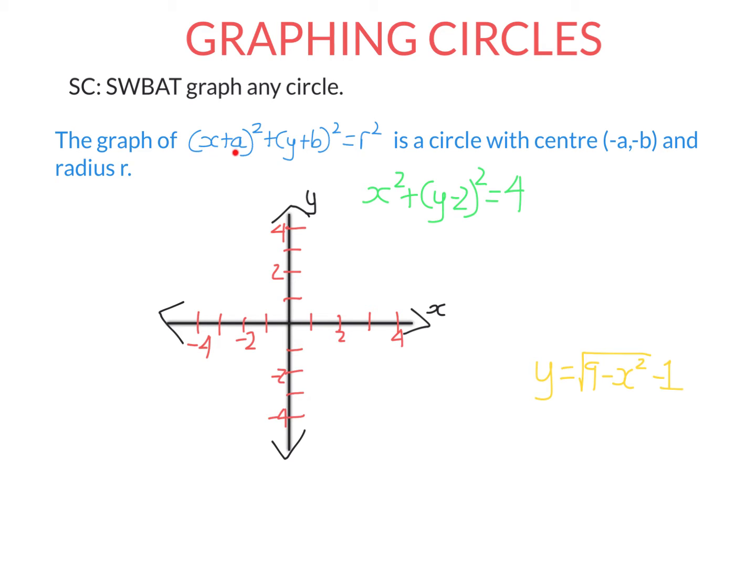So if you get an equation of the form (x+a)² + (y+b)² = r², it is a circle. Its centre is (-a, -b), so the negative of this number is the x-coordinate, negative of this number is the y-coordinate of the centre, and the radius is r. So the radius isn't this number, it's the square root of this number.